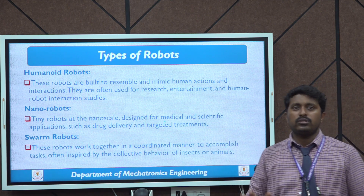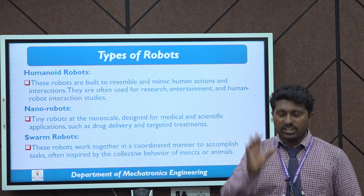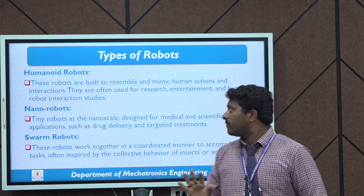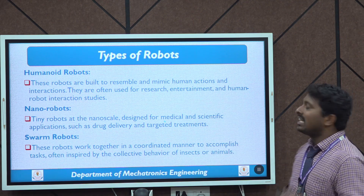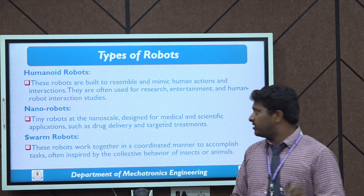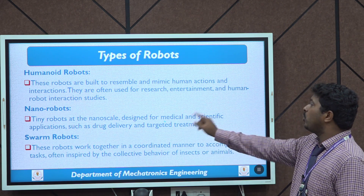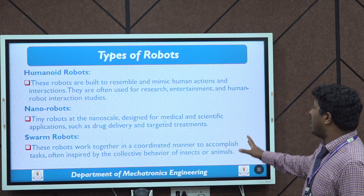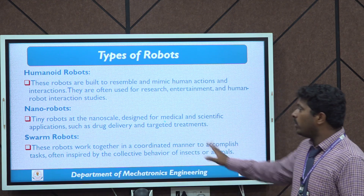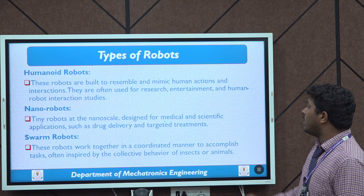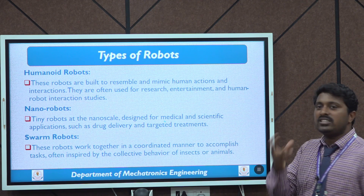Humanoid robots — the name itself gives the meaning. They look like humans. These robots are built to resemble and mimic human actions and interactions, and are often used in research, entertainment, and human-robot interaction. Nano robots are tiny robots at the nano scale, designed for medical and scientific applications such as drug delivery and targeted treatments. Finally, swarm robots work together in a coordinated manner, inspired by collective behavior of insects and animals — they are small in size and work in groups.